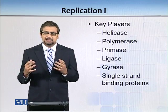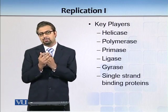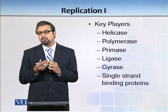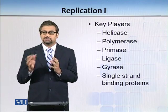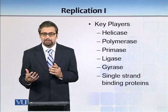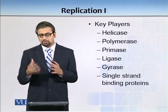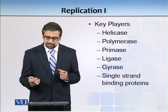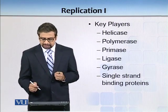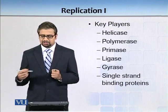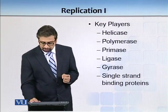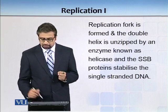Gyrase basically prevents DNA super-coiling — it either uncoils or prevents further supercoiling. Because if it's further coiled, then ultimately your replication fork cannot proceed. And then there are single strand binding proteins — you will see where those come into play.